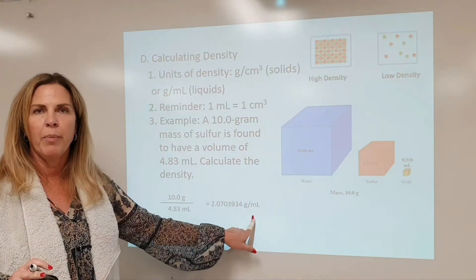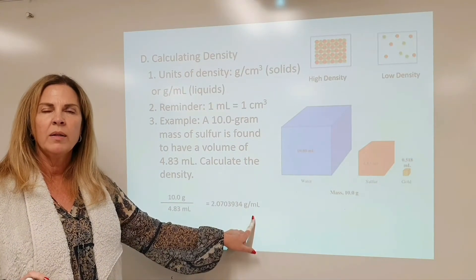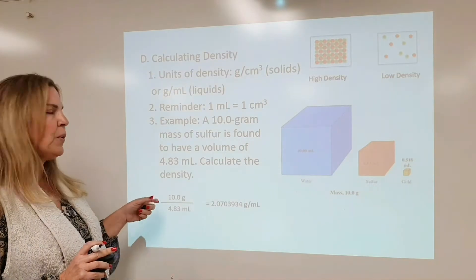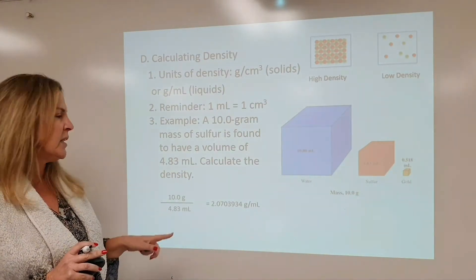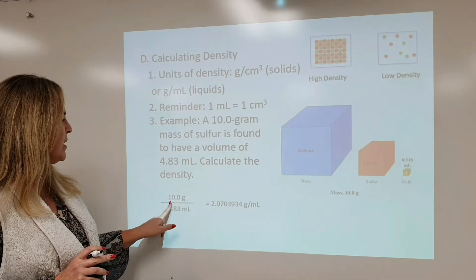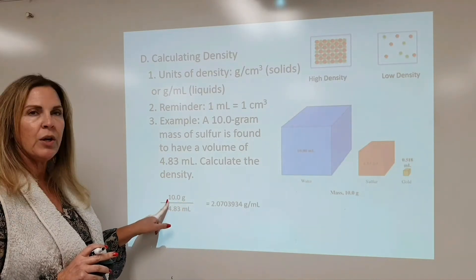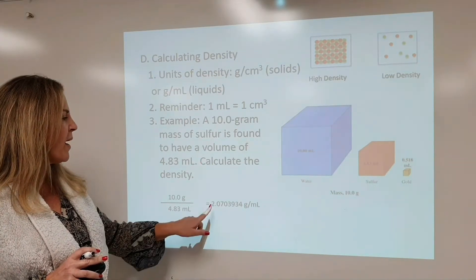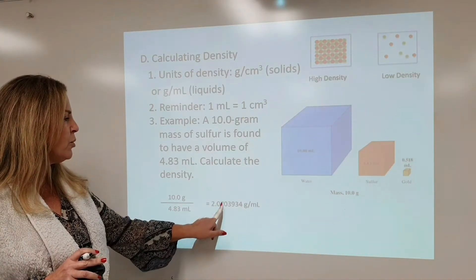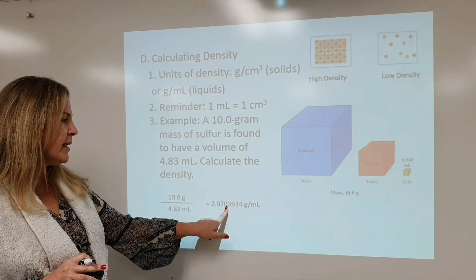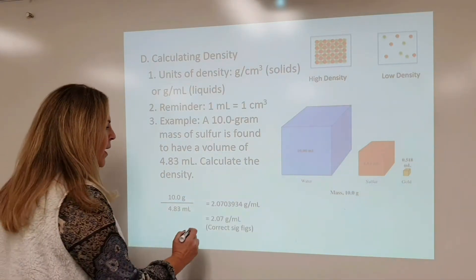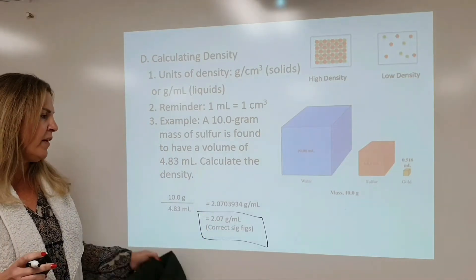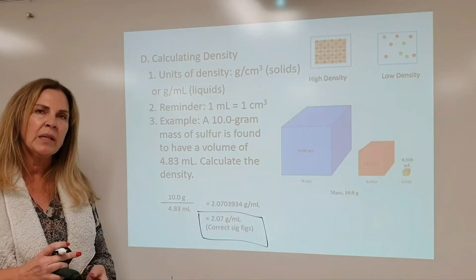We're doing division, so I look at the significant figures of the measurements. 10.0 has three significant figures, 4.83 has three significant figures. So my final answer rounded to three sig figs is 2.07 grams per milliliter.